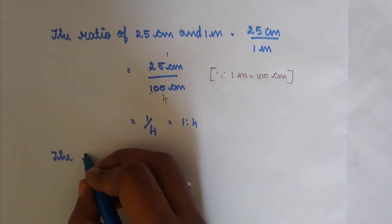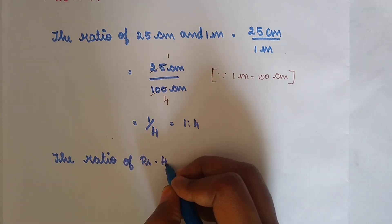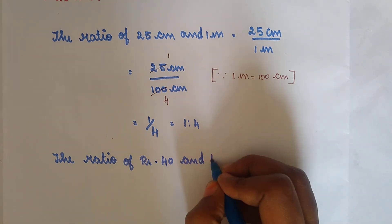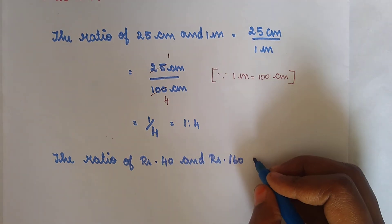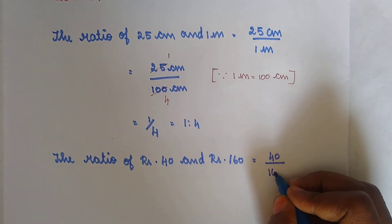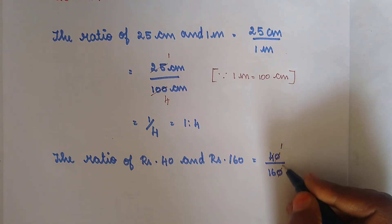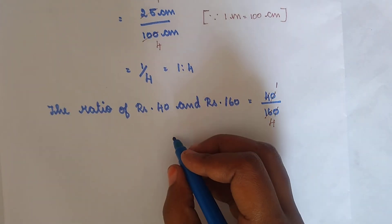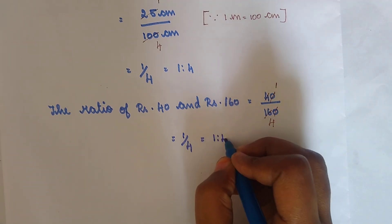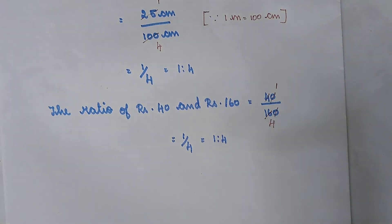Next, we find the ratio of Rs. 40 and Rs. 160. Here the units are the same, so we just find the answer. Cancelling in the 4 times table: 1 four is 4, 4 fours are 16. So we get 1 by 4, that is 1 is to 4. Now we compare the two ratios — they are equal.